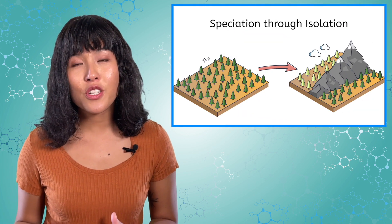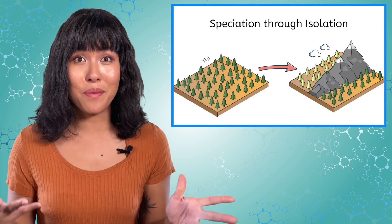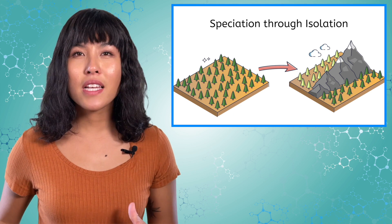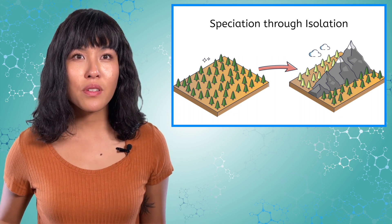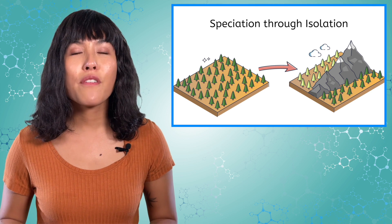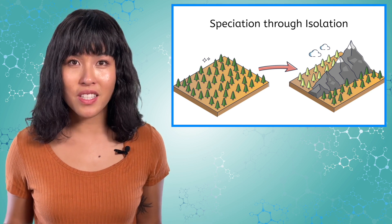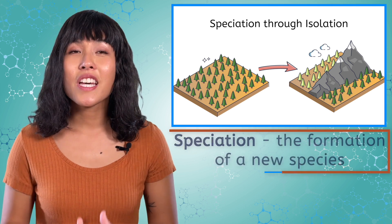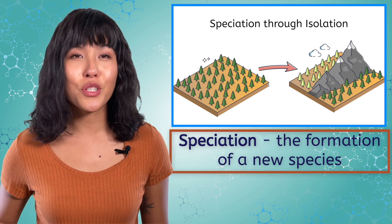If a group of individuals becomes isolated from the rest of the population, they will likely experience different challenges than the original group. This will lead to new adaptations. If enough time passes before they are reunited with the group, it's possible that the differences between them will have become so great that they won't even be the same species. This is called speciation—the formation of a new species.